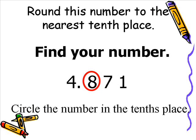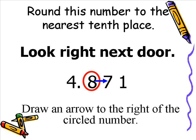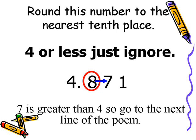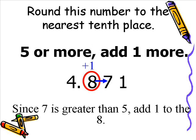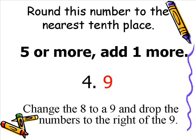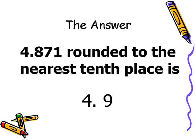This also works with decimals. For example, we want to round 4 and 871 thousandths to the nearest tenth place. Remember the point — find your number. The number in the tenth place is the 8, so we have circled it. Look right next door; we draw an arrow from the 8 to the 7. The 7 is greater than 4, so we go to the next line: 5 or more, add 1 more. Since the 7 is greater than 5, we add 1 to the 8 — the 8 becomes a 9. We drop all the numbers to the right of the 9. So 4 and 871 thousandths rounded to the nearest tenth place is 4 and 9 tenths.